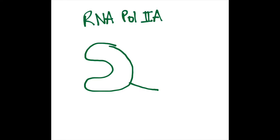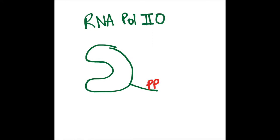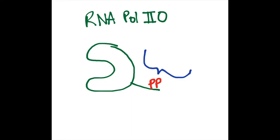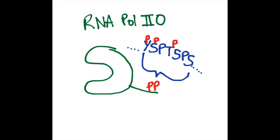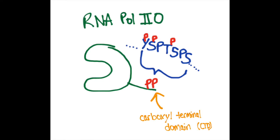Because RPB1 contains the only CTD that is phosphorylated in RNA polymerase II, we often call the unphosphorylated form RNA polymerase IIa. When the CTD of RPB1 is phosphorylated, we refer to it as RNA polymerase IIo form. The IIo form contains many phosphorylated serines, threonines, and tyrosines in the carboxyl terminal domain of the largest subunit, RPB1.